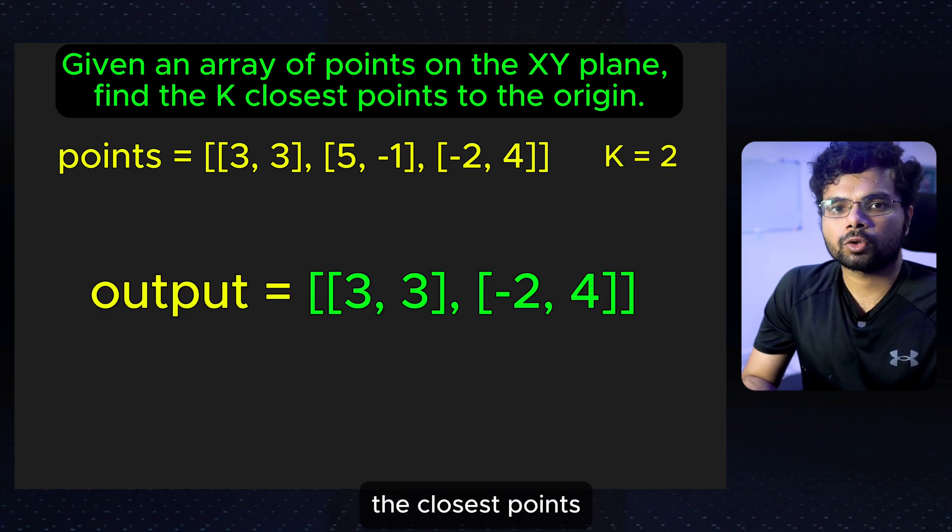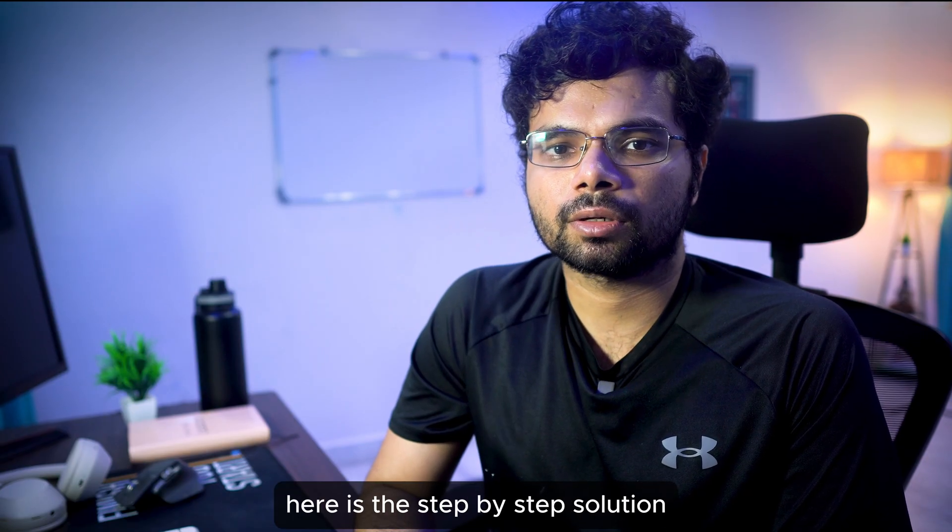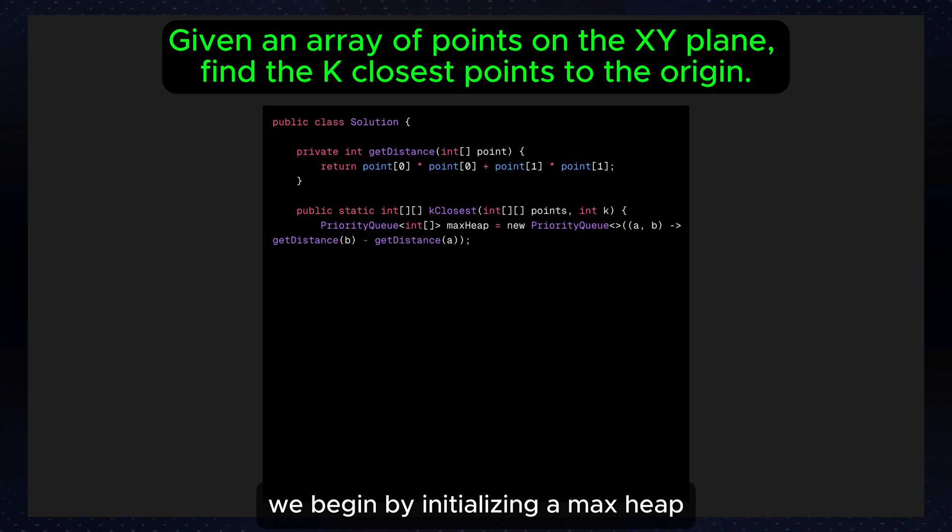Since we are asked to find the closest points, we will use a max heap to track the k closest points. Here is the step-by-step solution. We begin by initializing a max heap. We pass a comparator to order the heap elements by the distance from the origin.